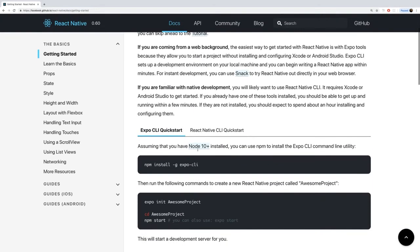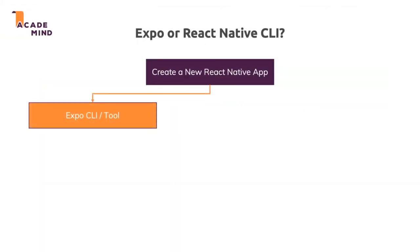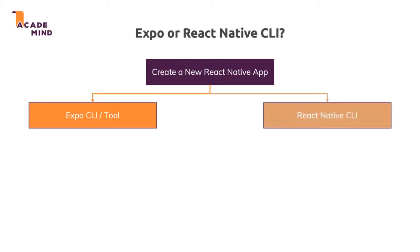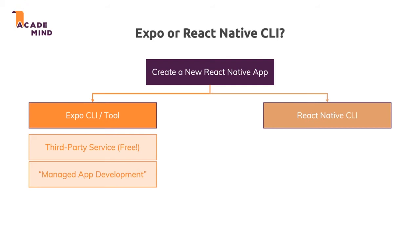We can use the Expo CLI tool for generating and managing our React Native app, or we can use the React Native CLI. Expo is a third-party service which is completely free to use — you don't need to sign up to get started and you don't have to pay to publish to the app store. Expo gives you a managed app development workflow, taking a lot of the complexity away, especially when it comes to integrating native device features like accessing the camera.